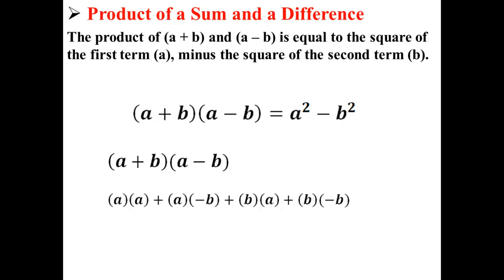Now in this expression, a times negative b and b times a cancel out, leaving us with just a² - b².